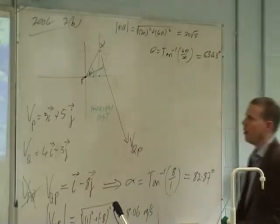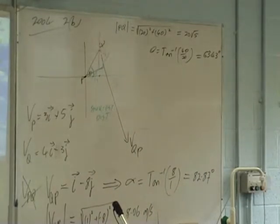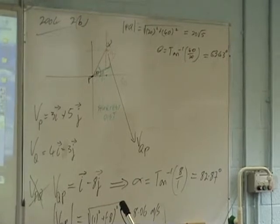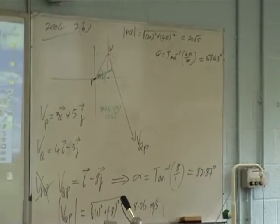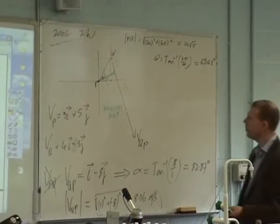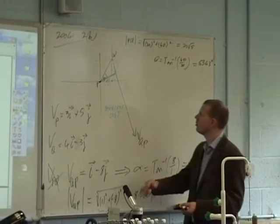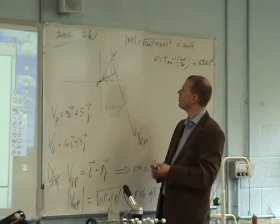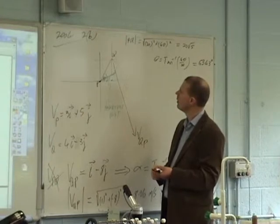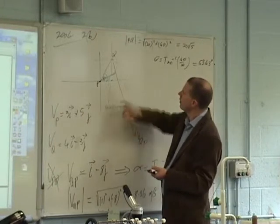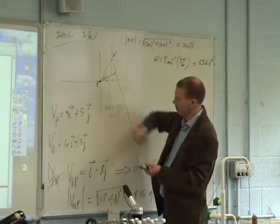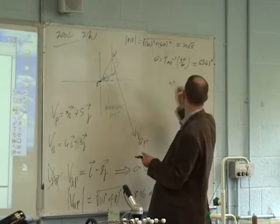So now, to work out the shortest distance, how do we normally work it out? It's normally just going to be an h·sin θ thing. So we need two things: we need the h, which in this case our diagonal corresponds to — the hypotenuse is 20√5. Yeah, that distance there. And have we got that? Yeah, 20√5.